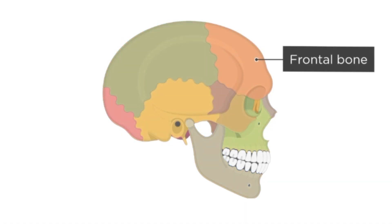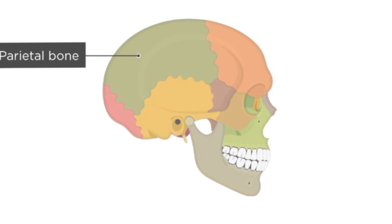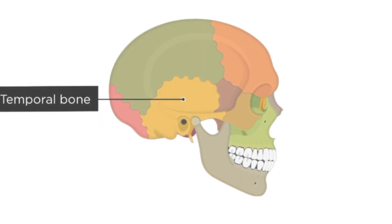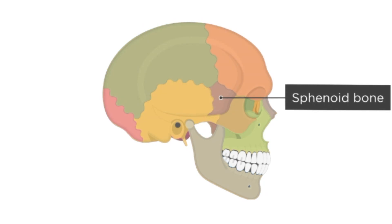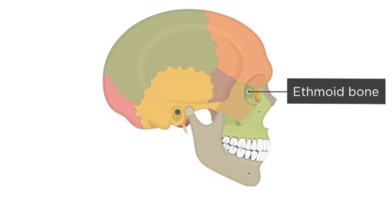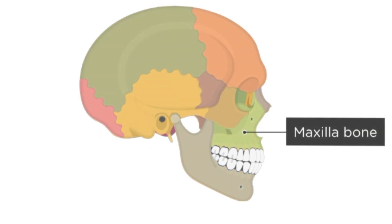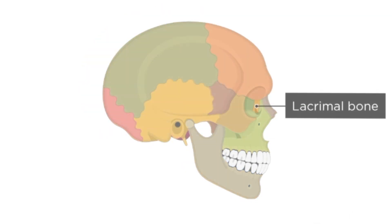The cranial bones include frontal bone, the parietal bones, occipital bone at the back, the temporal bones, the sphenoid bone, and the ethmoid bone. The facial bones consist of the following: the zygomatic bones, the maxillae, the nasal bones, and lacrimal bones.